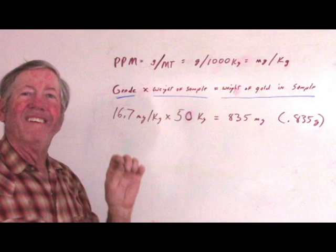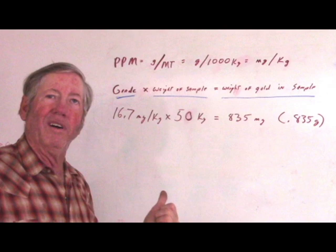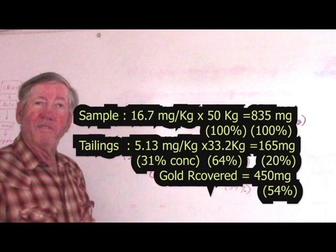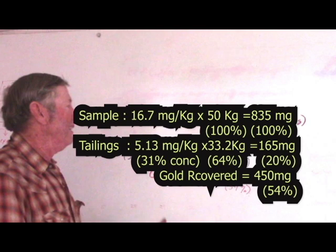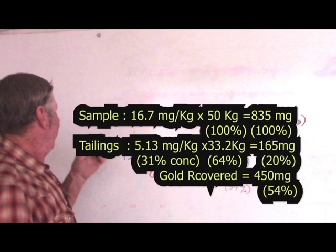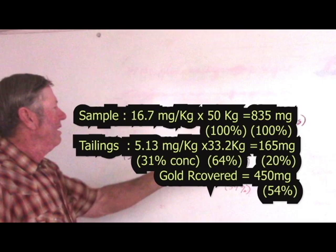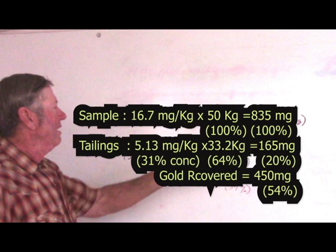So now we have a little more information up here. I ran it over my table. I wound up with 32.2 kilograms of tailings. The assay ran 5.13 parts per million. Gives me 165 milligrams of gold in the tailings.